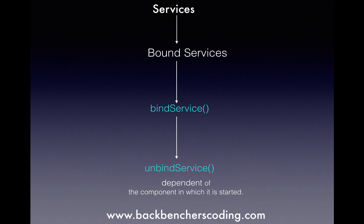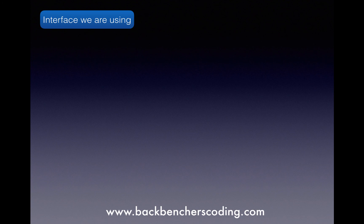A bound service serves another application component and allows components such as activities to bind to a service, send requests, receive responses, and perform inter-process communication. It uses two methods: bindService and unbindService. Bound services and the component that started them are mutually dependent, so if one stops the other automatically stops.